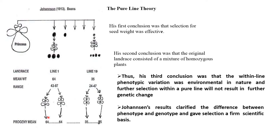Johannsen's conclusions were: first, that selection for seed weight was effective; second, that the original landrace consists of a mixture of homozygous plants; and third, that within the line, phenotypic variation was environmental in nature, and further selection within the pure line would not result in further genetic variation or change. Johannsen's result clarified the difference between genotype and phenotype and gave selection a firm scientific basis.